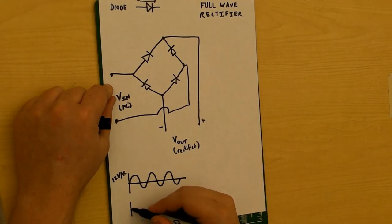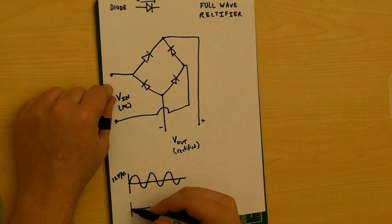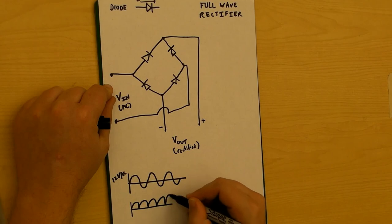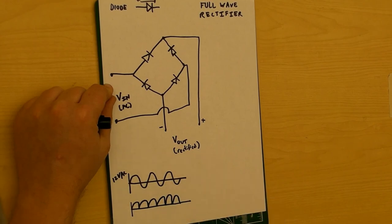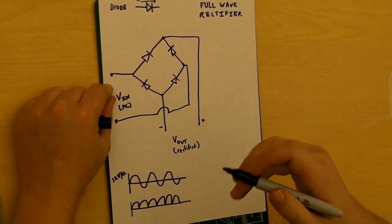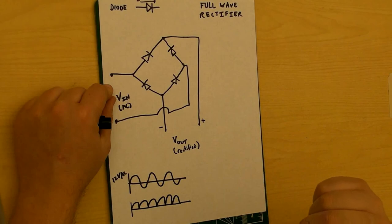So what that looks like after rectification, we get something that looks like this with all the humps being on the positive side. That's pretty cool. Now it's not good DC voltage. It's got a lot of ripple to it. But it gives us something that never flows negative.